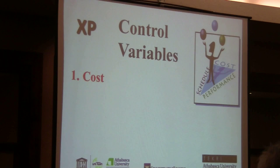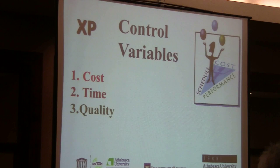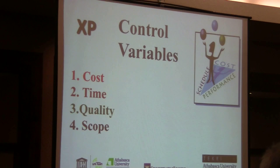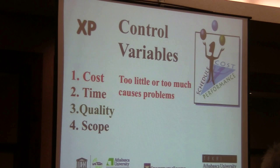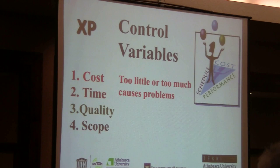Control variables: you've got cost, time, quality, and scope. We've all discussed the iron triangle — if you decrease the cost, it affects the quality, etc. If you change the cost, having too little or too much money causes a problem. A lot of people don't realize that too much money can cause real problems in any type of courseware development.